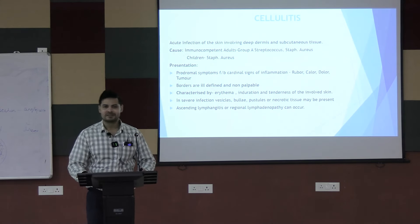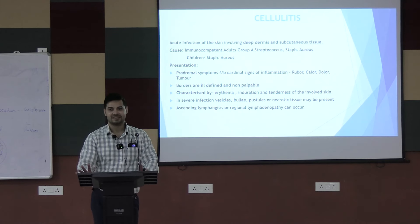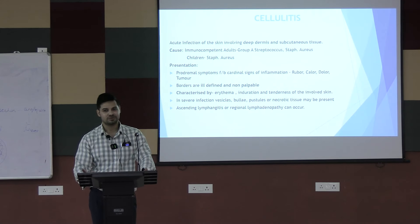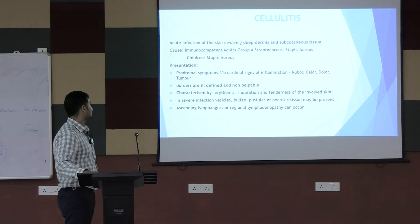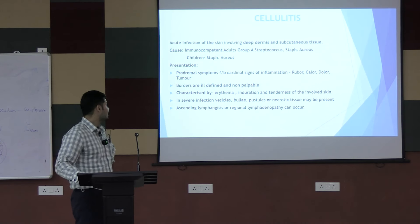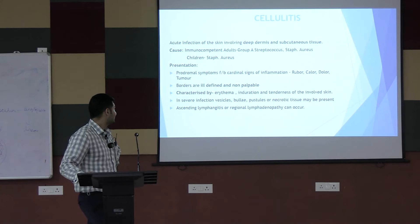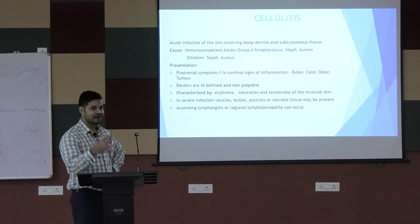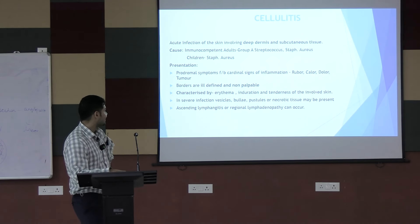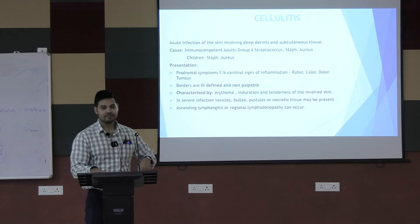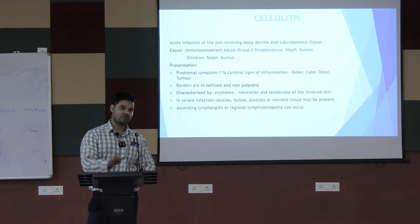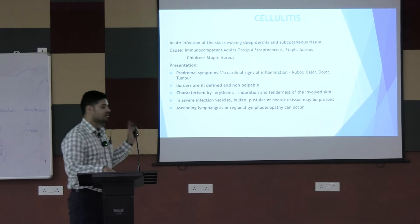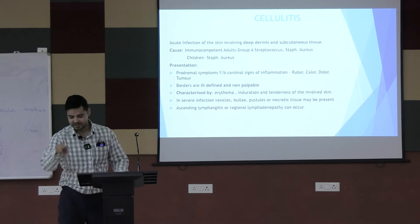Cellulitis is an acute infection of the skin involving the deep dermis and subcutaneous tissue, caused by Staph aureus and Streptococcus. It presents with signs of inflammation — erythema, edema, heat, tenderness — and is very painful. A key feature: the borders are ill-defined. This distinguishes it from erysipelas. Lymphadenitis may develop as a complication.